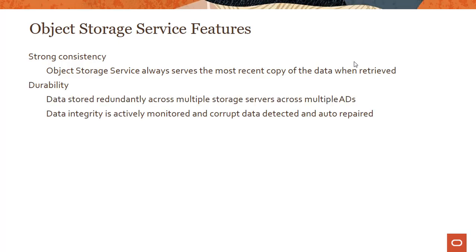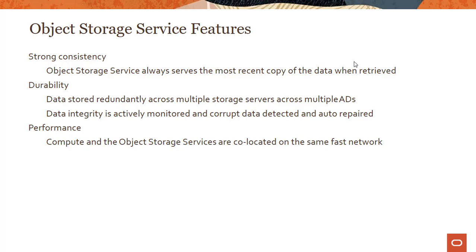As far as durability is concerned, data is stored redundantly across multiple storage servers and multiple Availability Domains. In a single-AD region, data is stored redundantly across fault domains. Some storage services leverage fault domains internally, so data gets stored across multiple fault domains — meaning even if one goes down, the others are still up and running. Data integrity is actively monitored, and corrupt data is detected and auto-repaired. So this is a highly durable service.